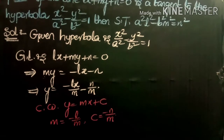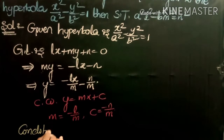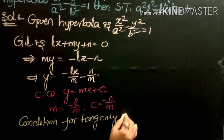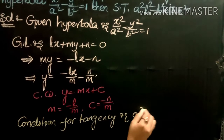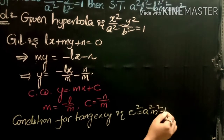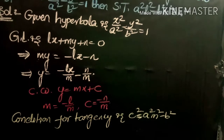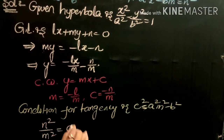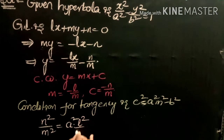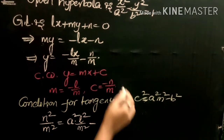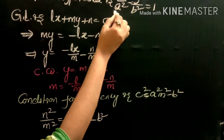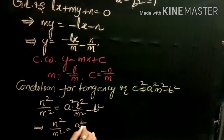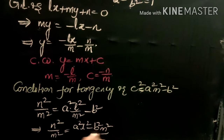Applying the condition for tangency, c squared equals a squared m squared minus b squared. Substituting: n squared by m squared equals a squared into l squared by m squared minus b squared. Multiplying through by m squared: n squared equals a squared l squared minus b squared m squared.